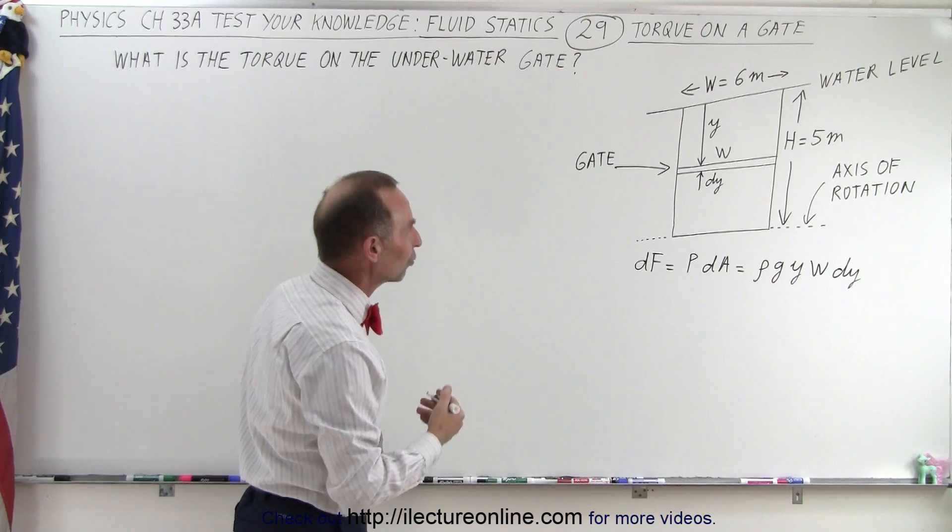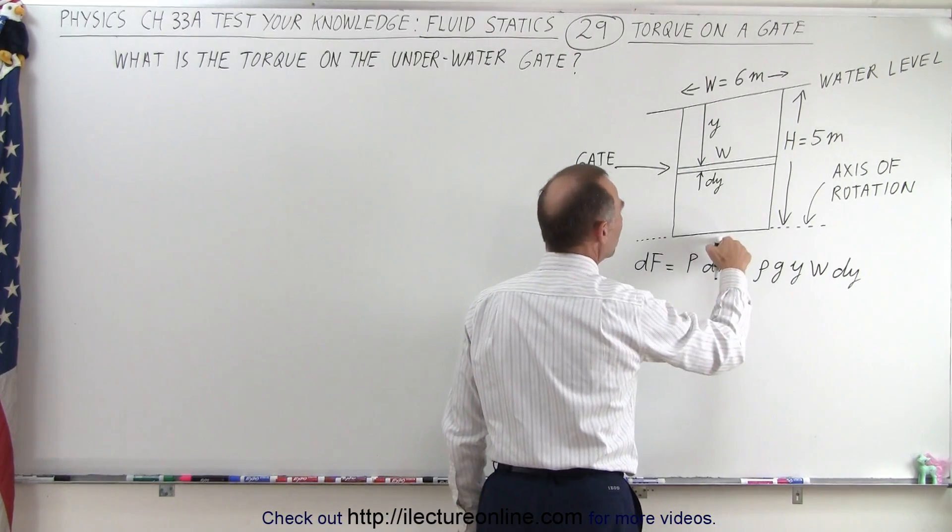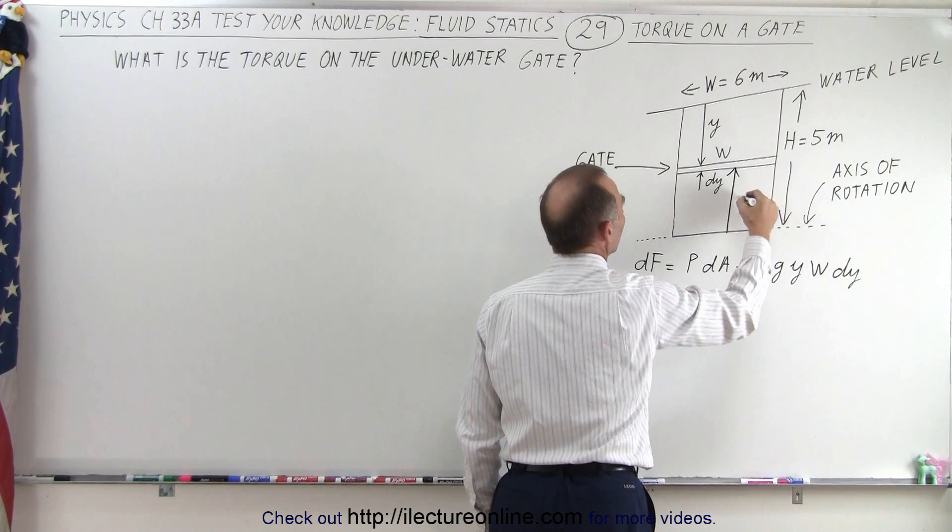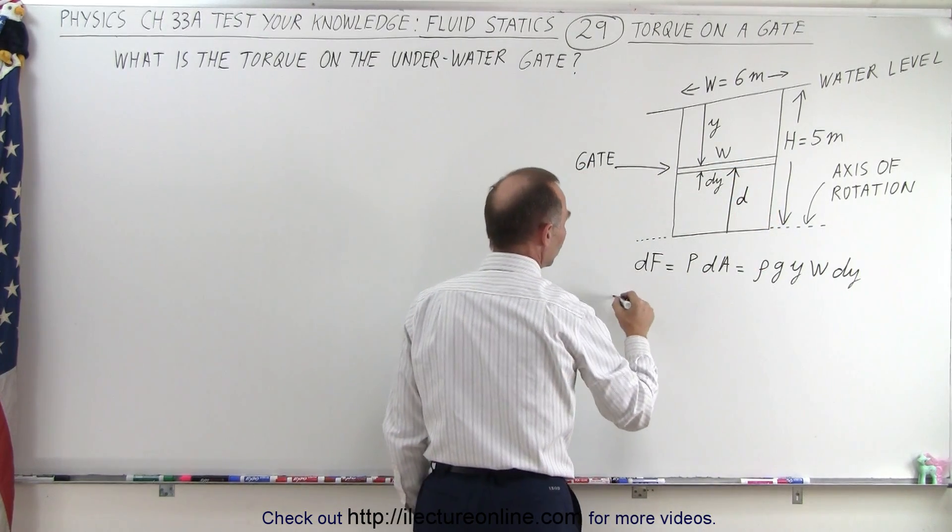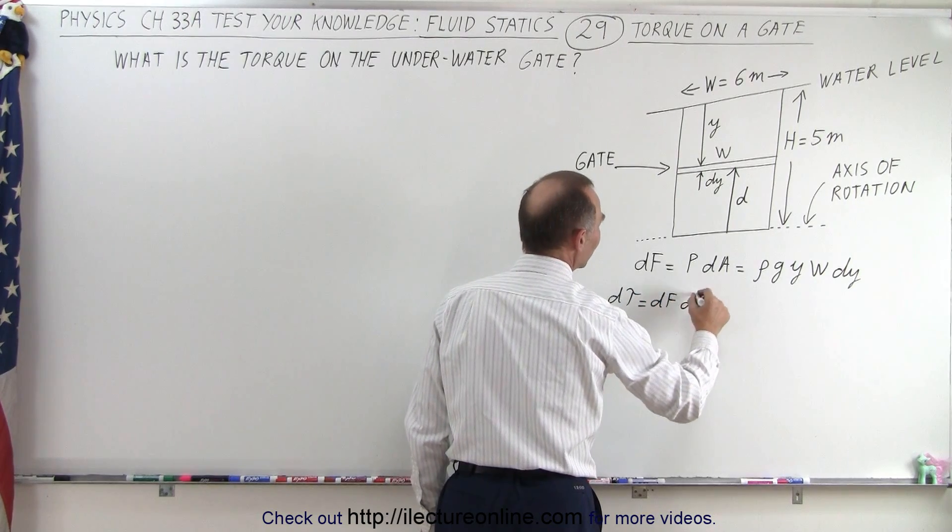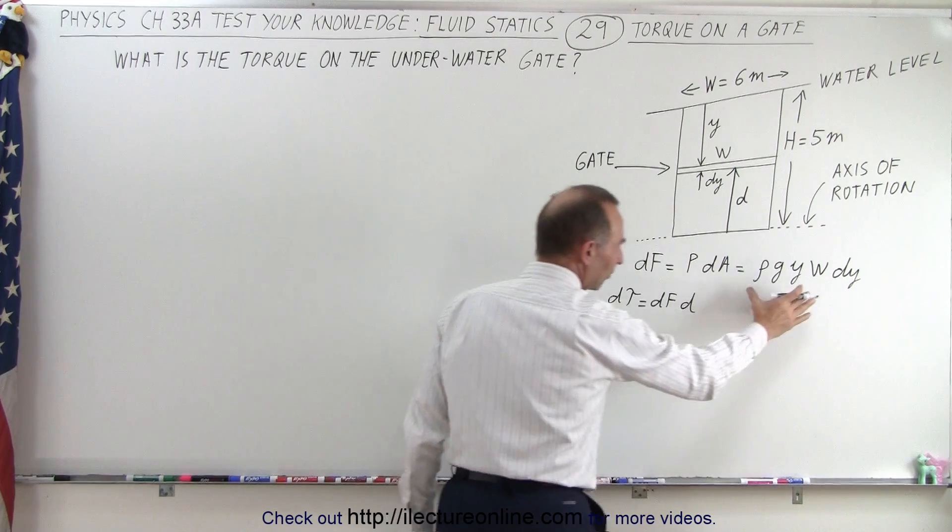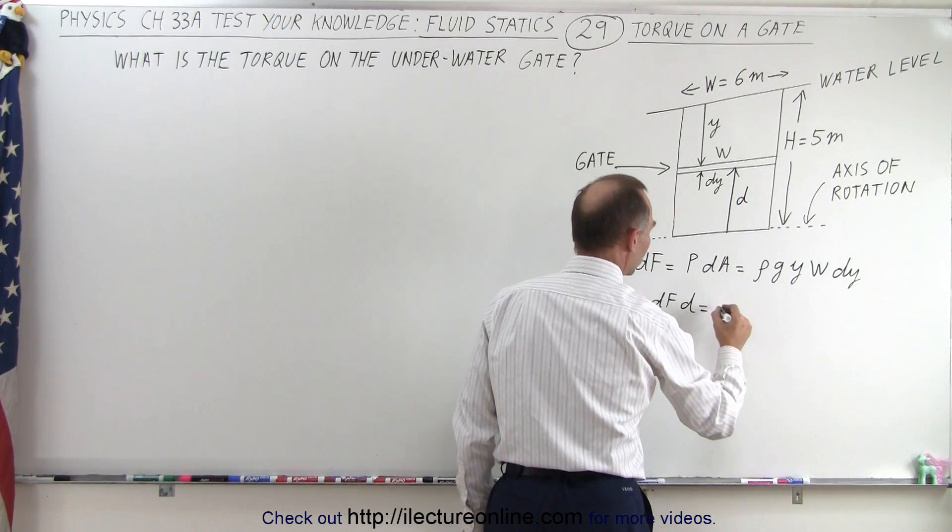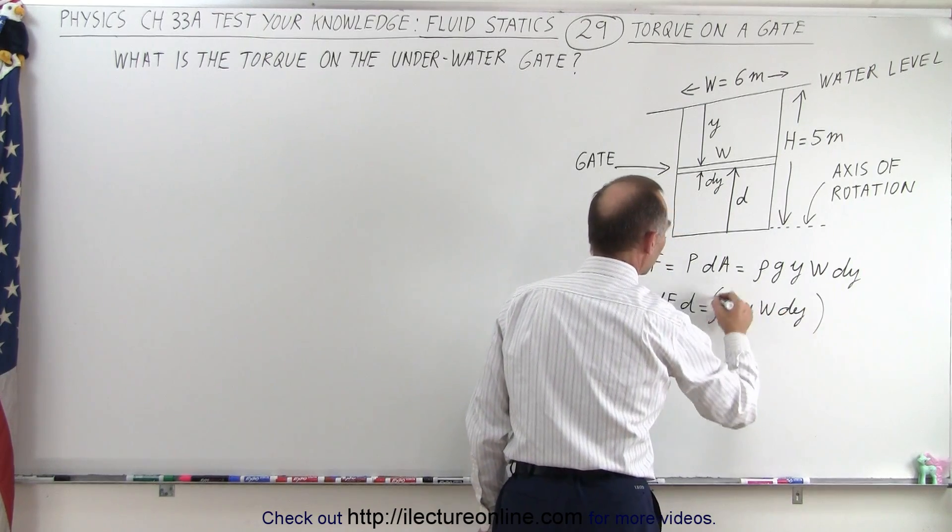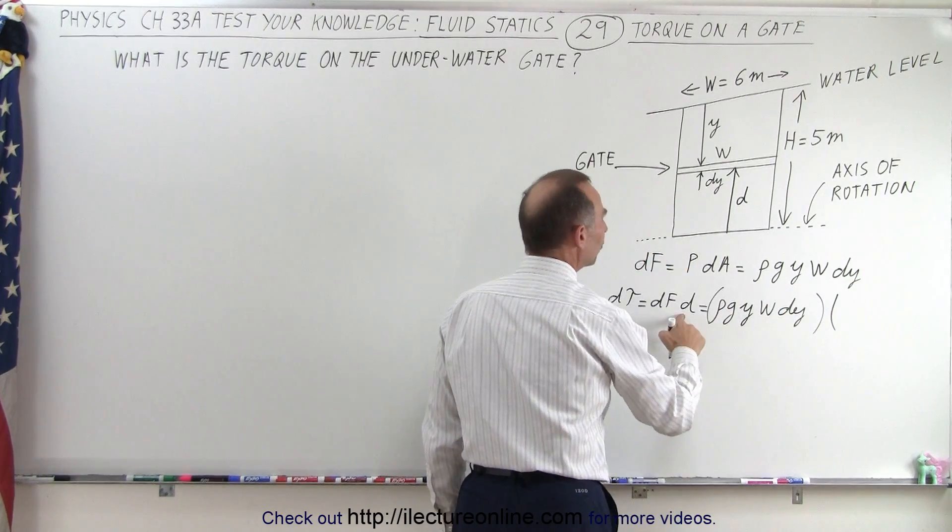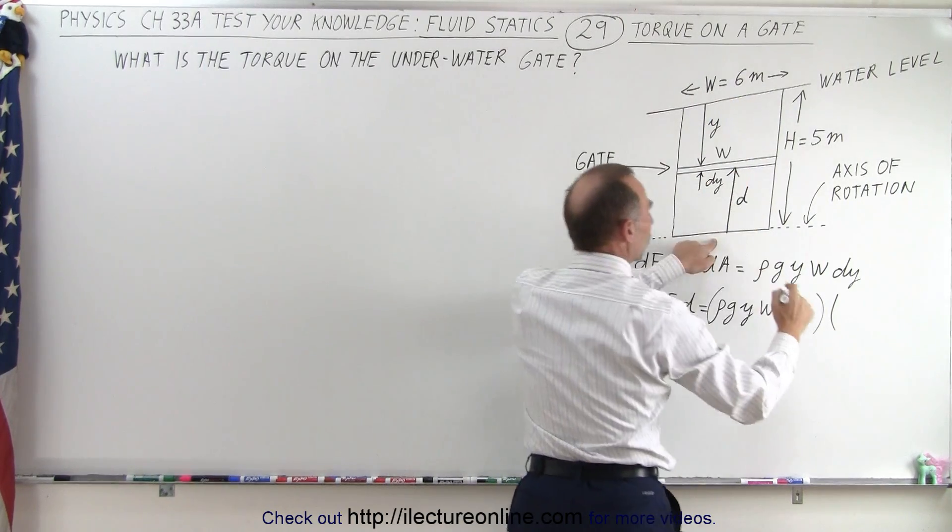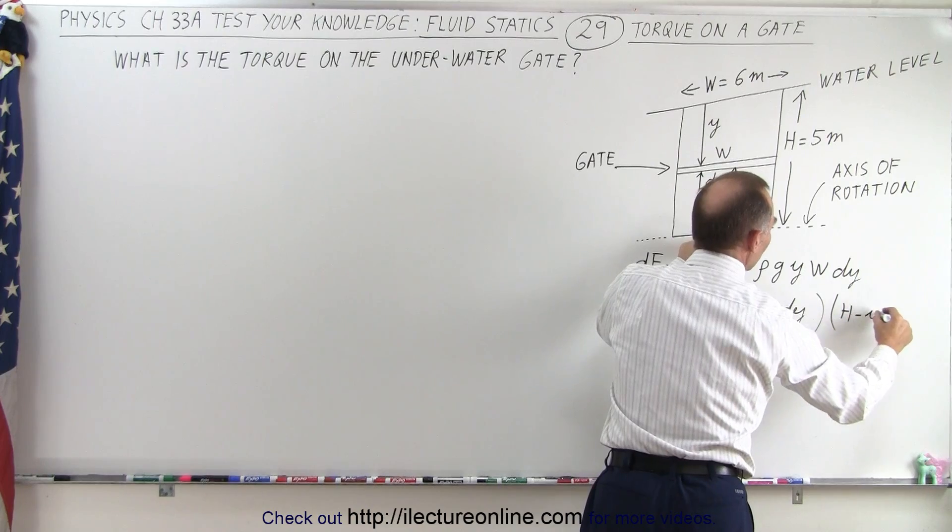And then what would be the torque against that small little strip? And of course the torque would be relative to the bottom of the gate here, that would be a distance D above the bottom, and so dτ would be equal to dF times D. And dF is already defined here so that would be equal to ρGYW dY and then we have to multiply that times the distance from there to there. Now the distance from there to there would be the total height minus Y so that could be written as H minus Y.